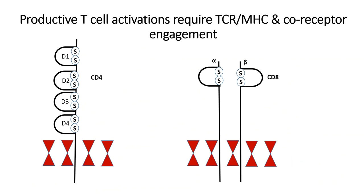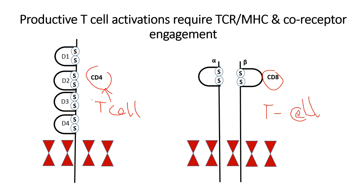In addition to the CD3-TCR complex, for the productive activation of T cells, it requires T cell MHC and coreceptor engagement. The coreceptors include CD4 and CD8, which are present in the T cells: CD4 is present in CD4-plus T cells, and CD8 is present in CD8-plus T cells. These CD4 and CD8 coreceptors bind to the complex consisting of TCR, MHC, and peptide, and induce the signal transduction that helps in T cell activation.